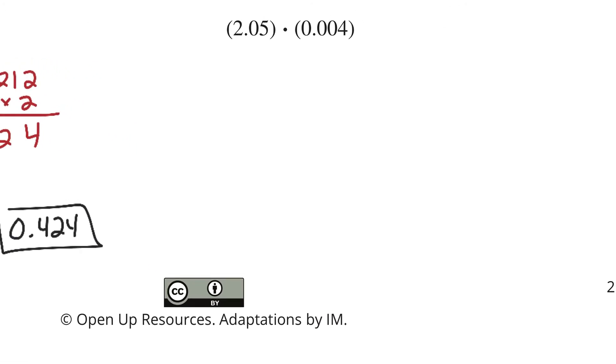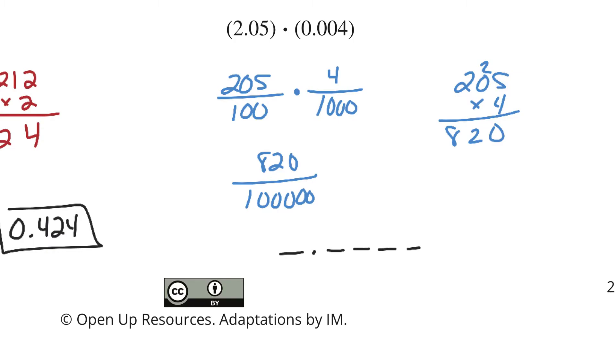Our second one, 2 and 5 hundredths, so 205 hundredths, multiplied by 4 thousandths. If we multiply out 205 times 4, you get 820. 100 times 1,000 is 100,000. We have our 1's place, tenths, hundredths, thousandths, ten thousandths, hundred thousandths. Backfill, the 2, the 8, and then 0's in the hundredths and tenths and 1's spot. So we have a solution here of 820 hundred thousandths.